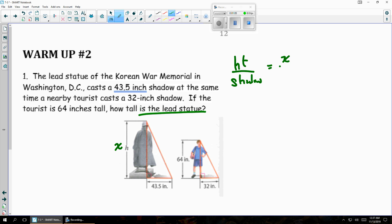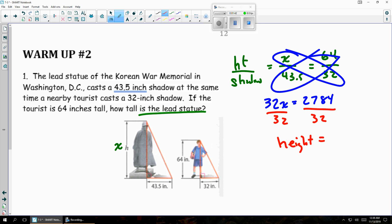So we have the height of the statue over the shadow of the statue. That equals the height of the tourist over the shadow of the tourist. We'll cross multiply. And that gives us 32X equals 2784, dividing both sides by 32. The height of the statue is 87 inches tall, according to this problem.